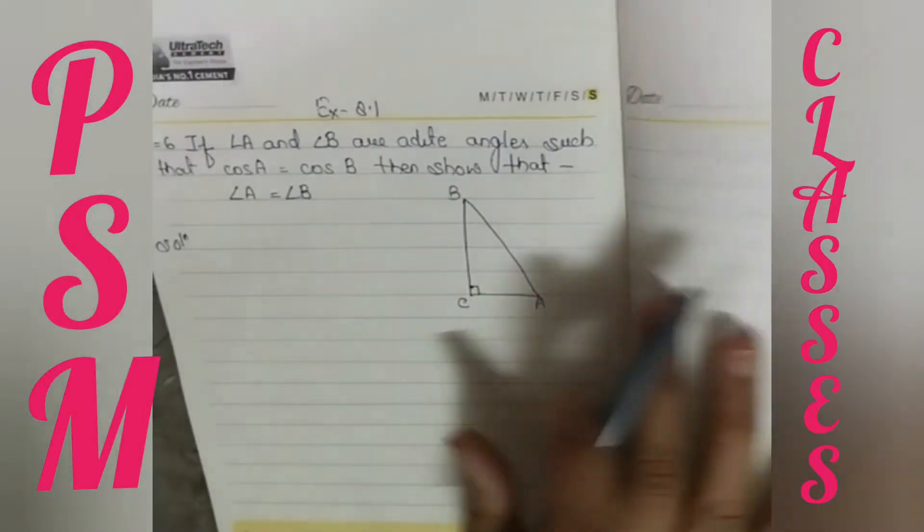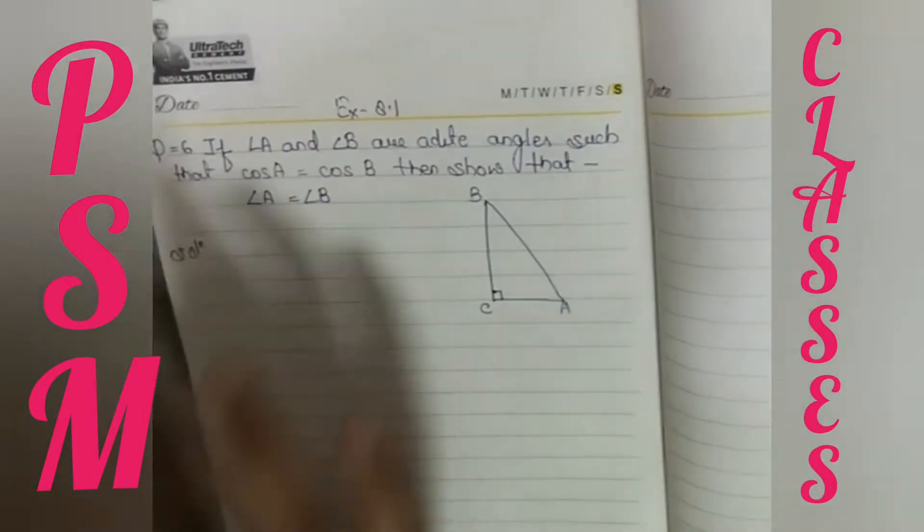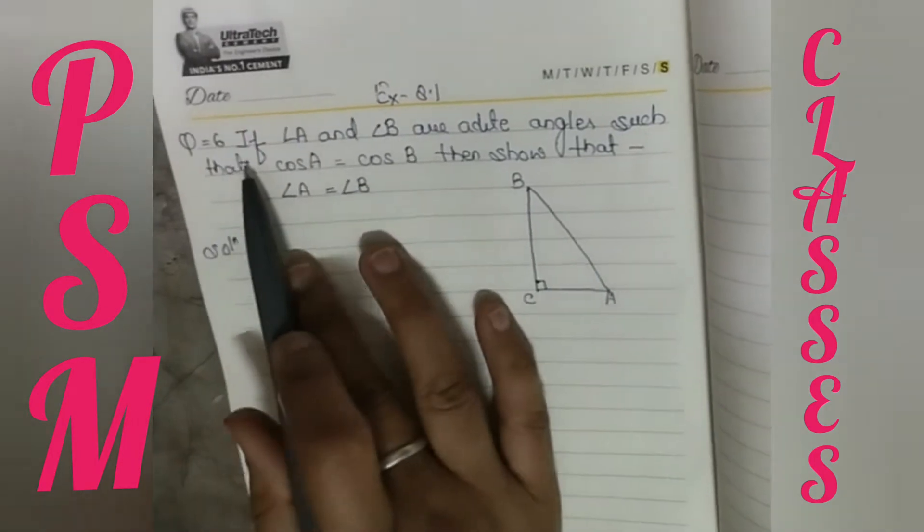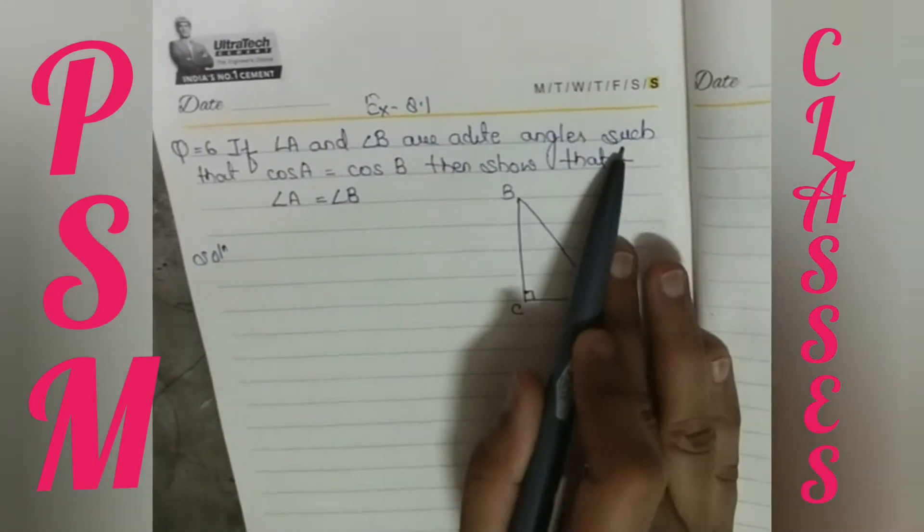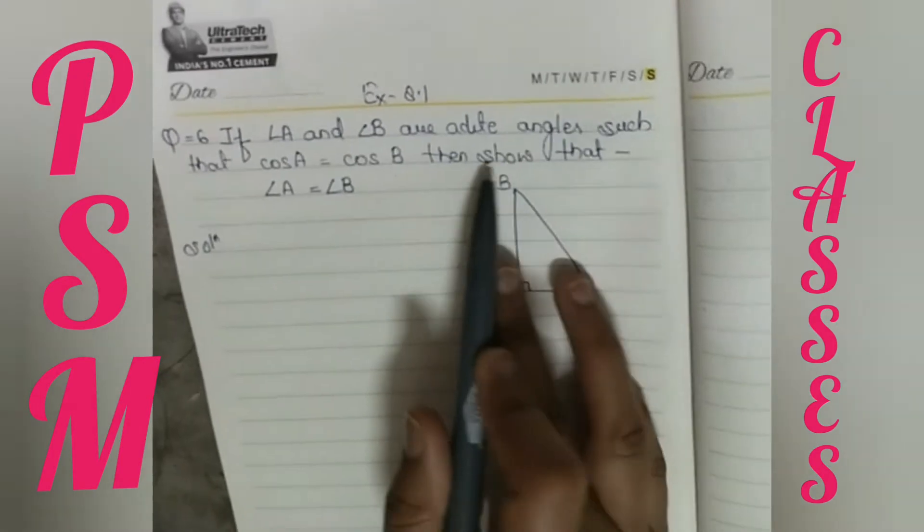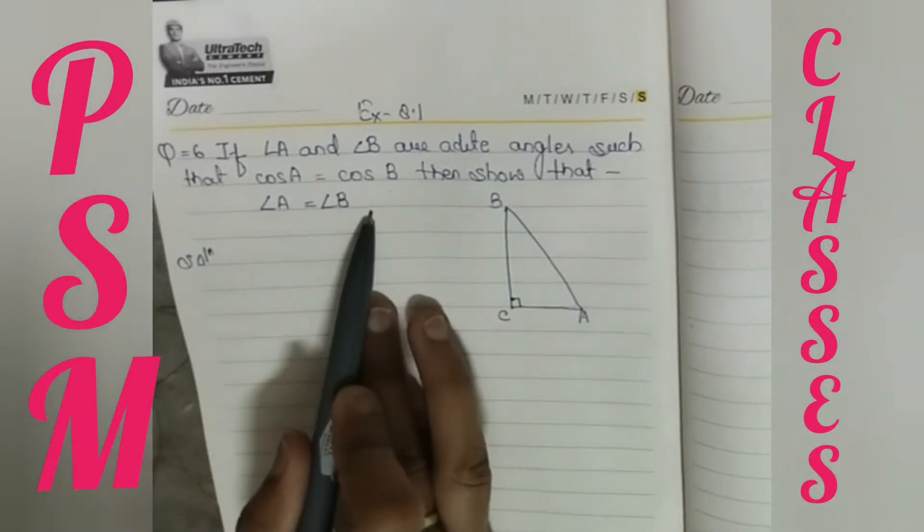Hello everyone, today we are going to solve question number 6. As you can see, if angle A and angle B are acute angles such that cos A is equal to cos B, then show that angle A is equal to angle B.